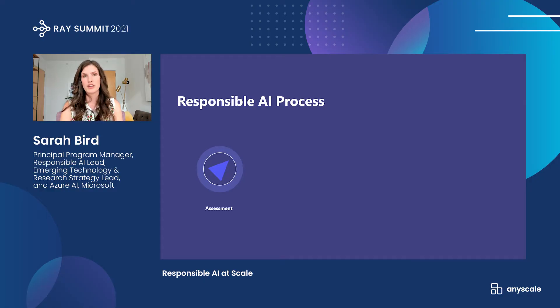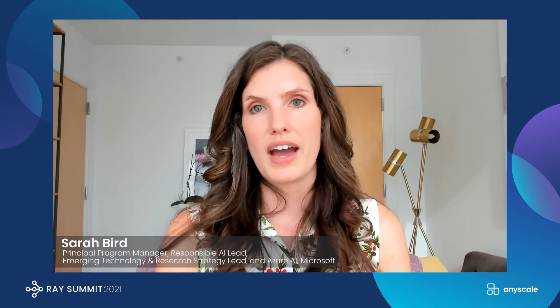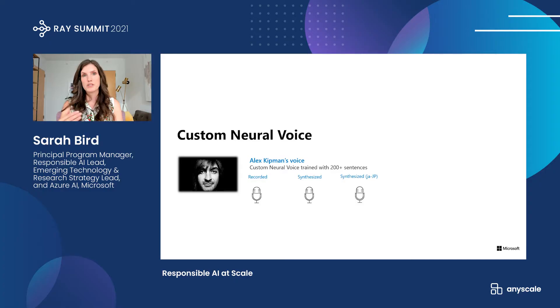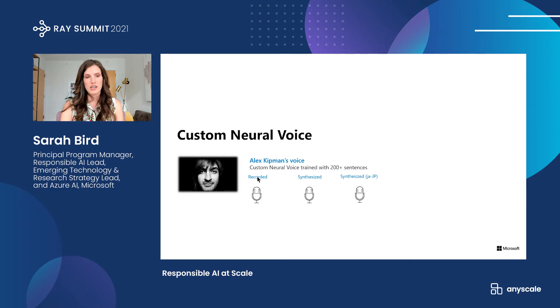Looking at this first step, assessment, we often bring in groups of experts and diverse stakeholders to really understand the potential impact of a technology. With that, we have some clear ideas about what we need to do to design the technology responsibly. Let's look at an example: custom neural voice, which is a new technology that we just GA'd in February. Let's listen to Alex Kipman, one of our executives who worked on this — here's his regular voice.